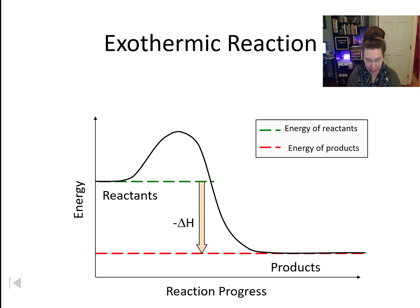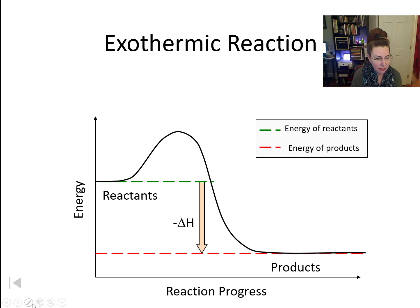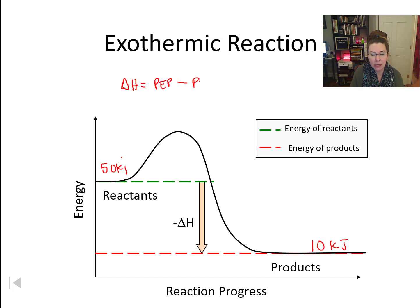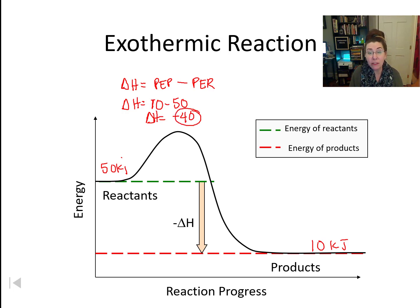Let's take a look at an exothermic reaction. In this exothermic reaction, the reactant level of energy is higher than our product level. Let's assign some numbers: the energy in our reactants is 50 kilojoules and the energy in our products is 10 kilojoules. What would our delta H be? Delta H equals the potential energy of the products minus the potential energy of the reactants — PEPPER. So delta H would be 10 minus 50, which means delta H equals negative 40, which makes perfect sense because a negative delta H means it's an exothermic reaction.